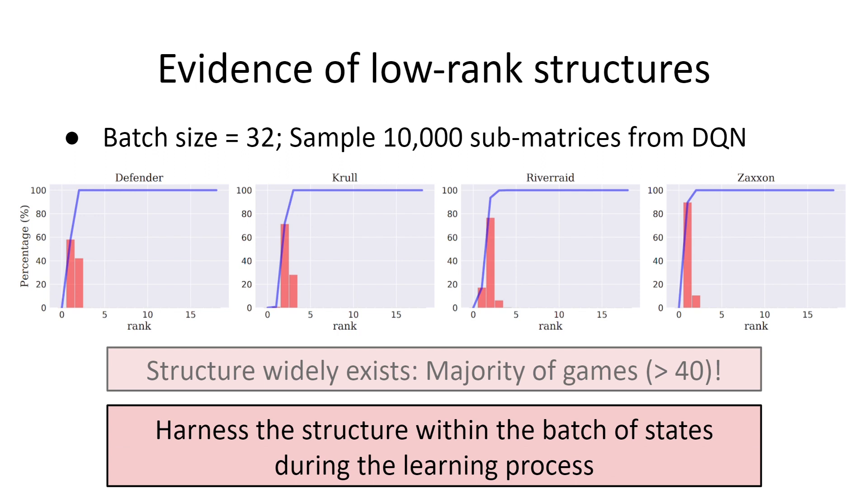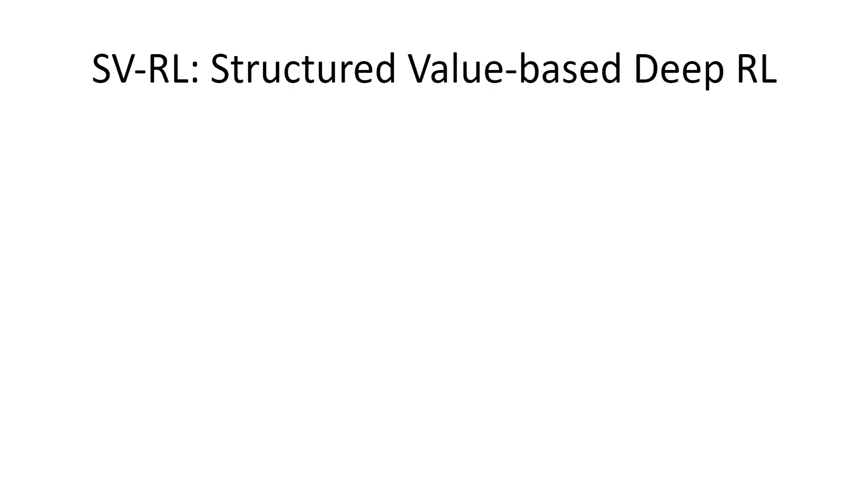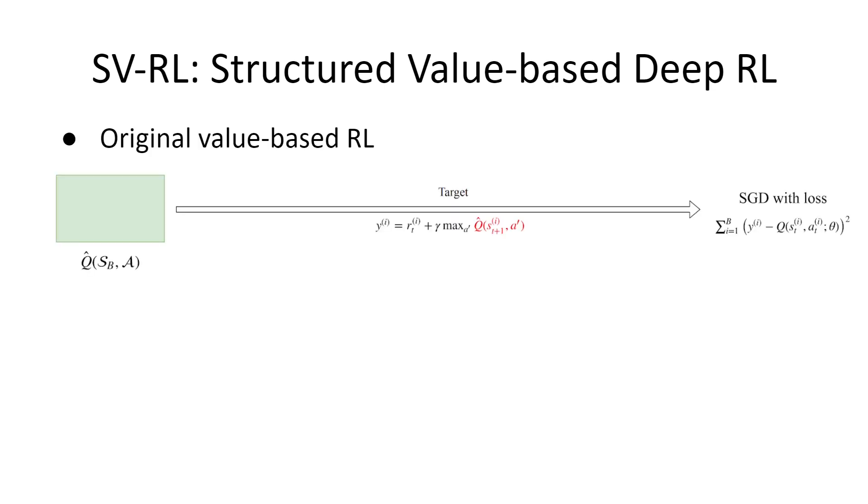During the analog to SVP, this evidence naturally suggests us to harness the structure within the batch of states during the learning process. That is, each SGD step of updating the model parameters. Now, we can formally describe our structured framework for value-based deep RL. As we only focused on generic structure, it can be easily incorporated into any RL methods that update the Q network via a similar step as in Q-learning. Recall that all these methods have a common update step via SGD, where a mini-batch of transitions are sampled and then the targets Y are formed according to the Bellman update.